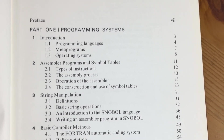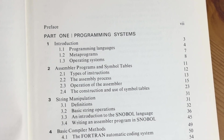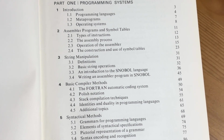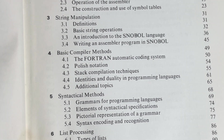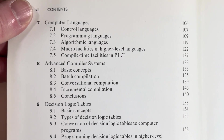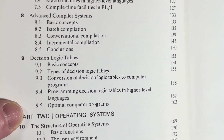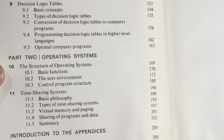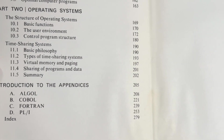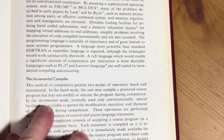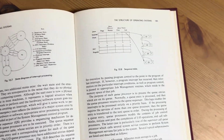So here it starts with programming systems — that's part one. You've got like an introduction, some languages, meta programs. Look at that stuff, it's cool. String manipulation. Basic compiler methods. Let's turn the page here, see what else we have. Computer languages. Advanced compiler systems. Decision logic tables — we should definitely look at that. Operating systems. There's some appendices. I want to go to the decision logic tables really quick, just before I forget, because that seems interesting.